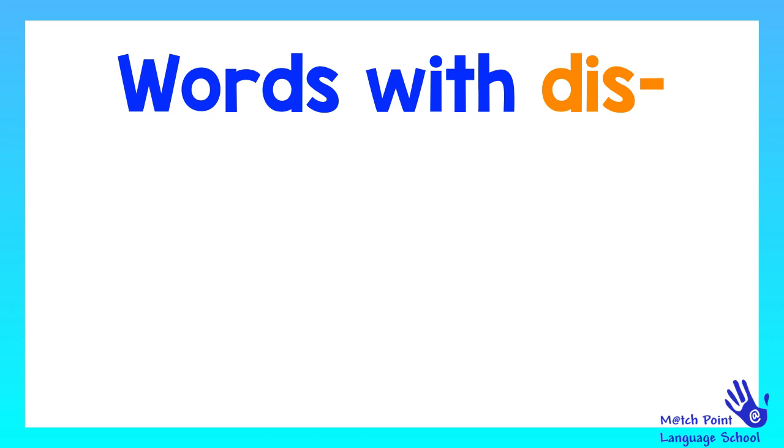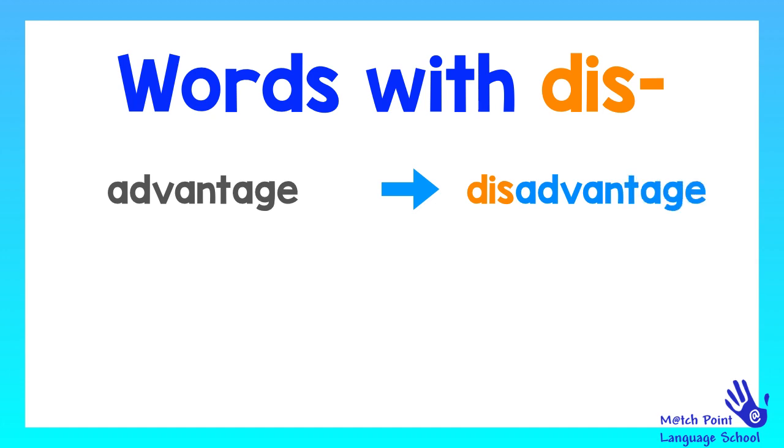Now we are going to see words that use the prefix dis. For example, advantage. If we add the prefix dis, it becomes disadvantage. Next word: appear. If we add the prefix, it becomes disappear.